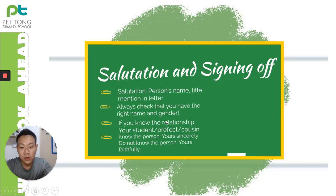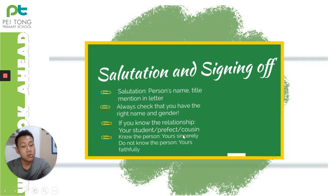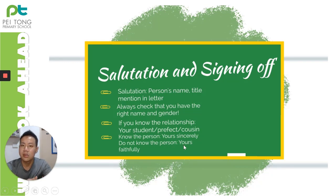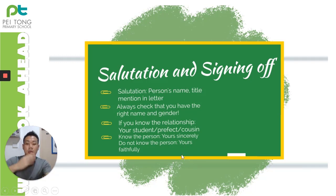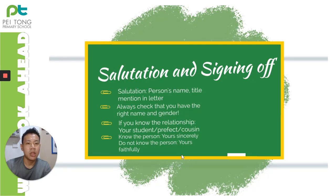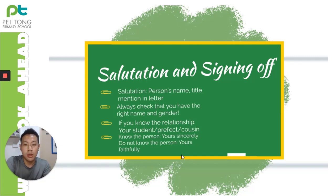To clarify: for formal letters, if you know the person — for example, you know the principal or are writing to a discipline master — you can use 'yours sincerely.' But if you do not know that person, for instance the manager of McDonald's, then you sign off as 'yours faithfully.' Also, when writing formal letters, always include your surname. So rather than just writing 'John,' you would write 'John Tan.' Look carefully in the question for the name of the person writing the letter.